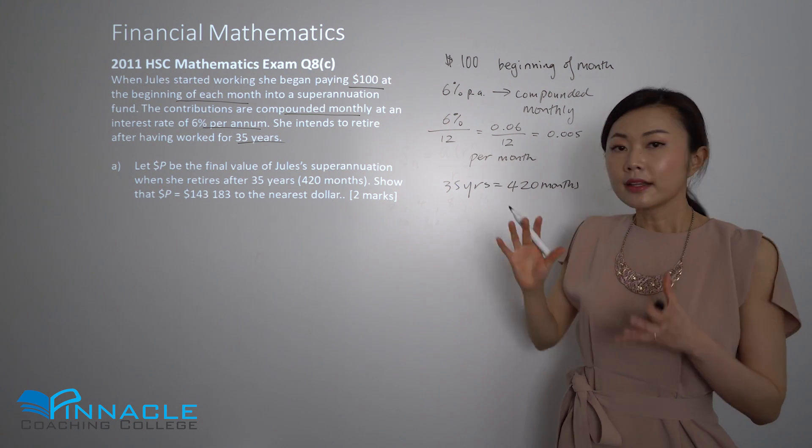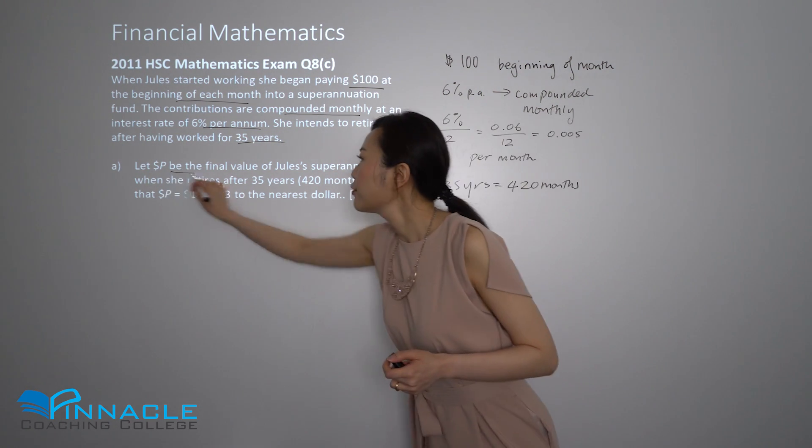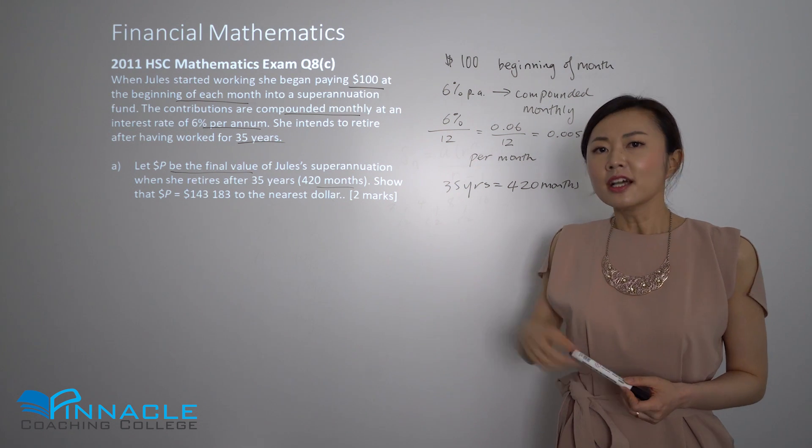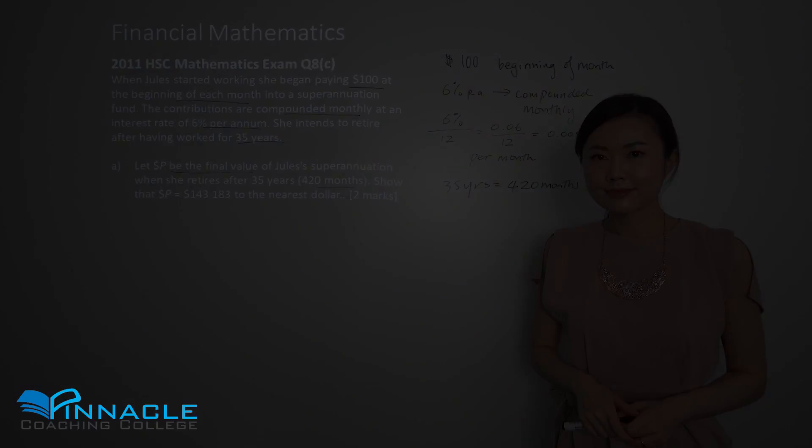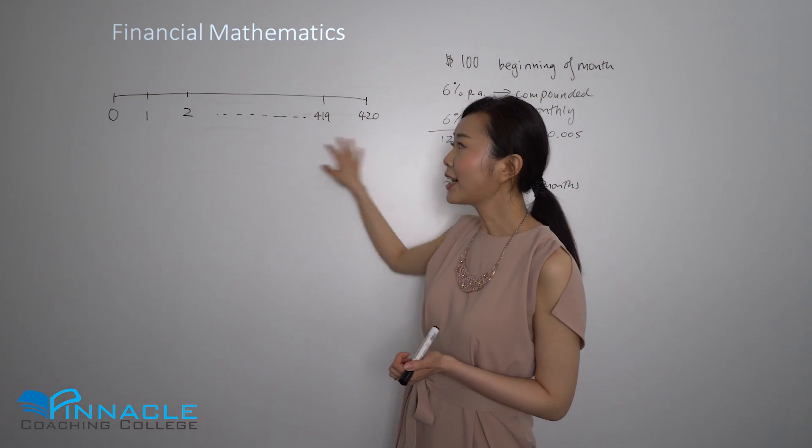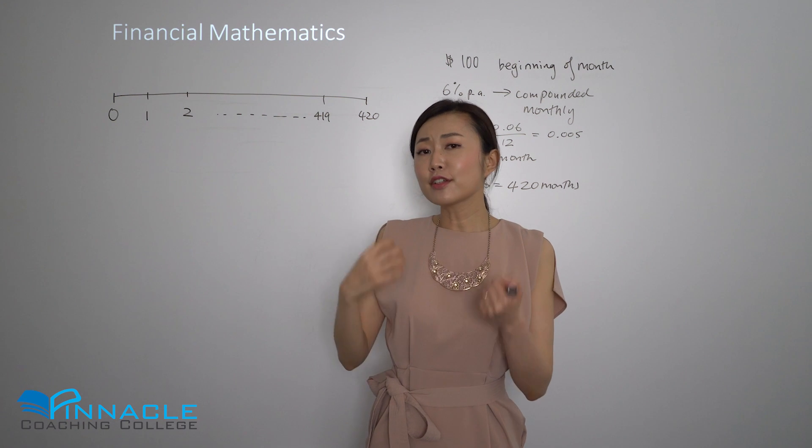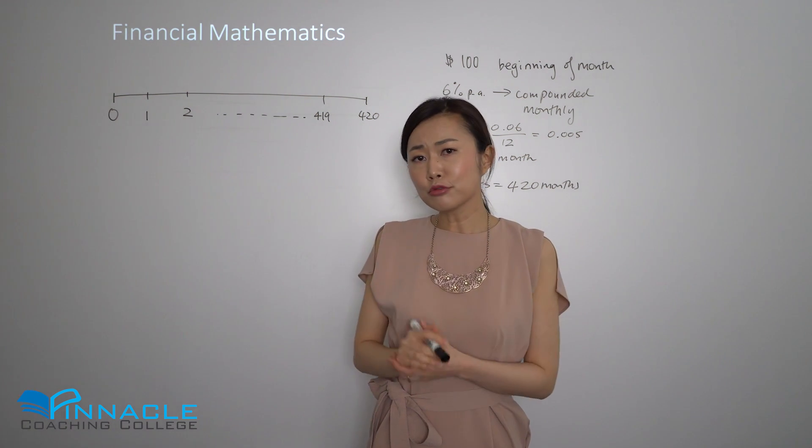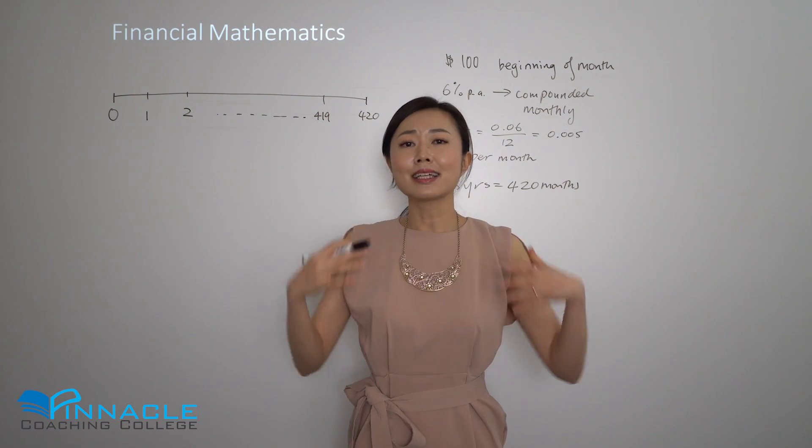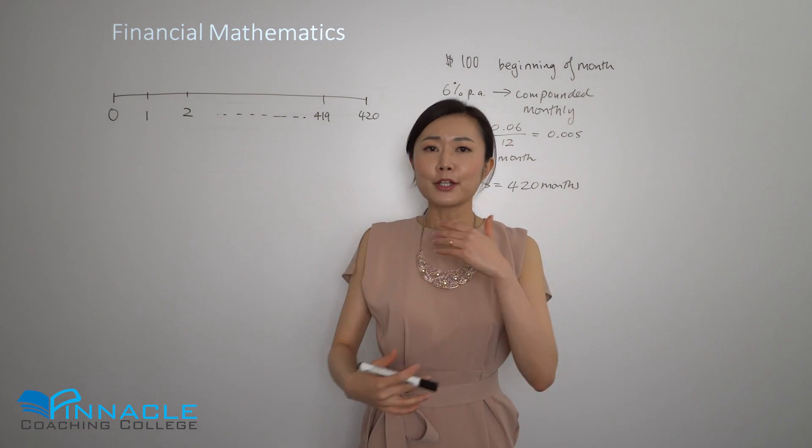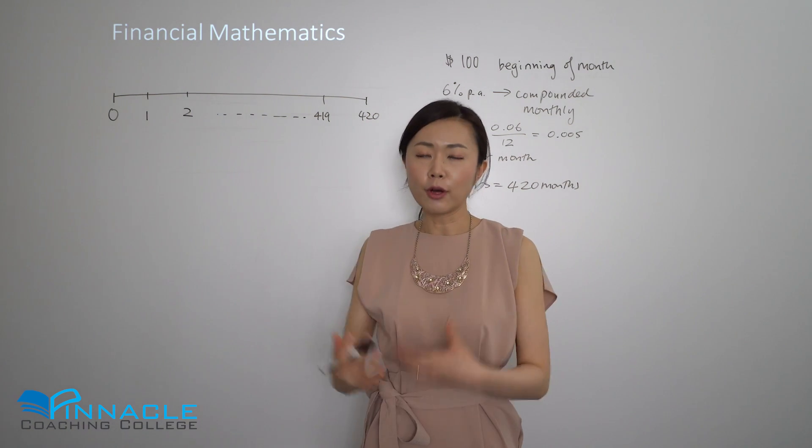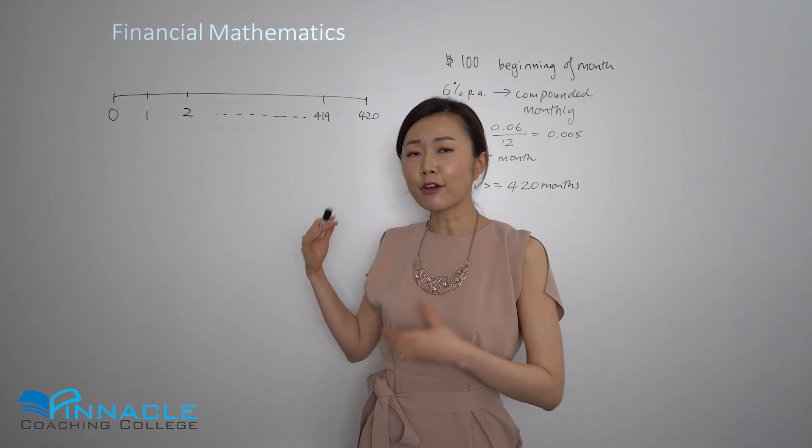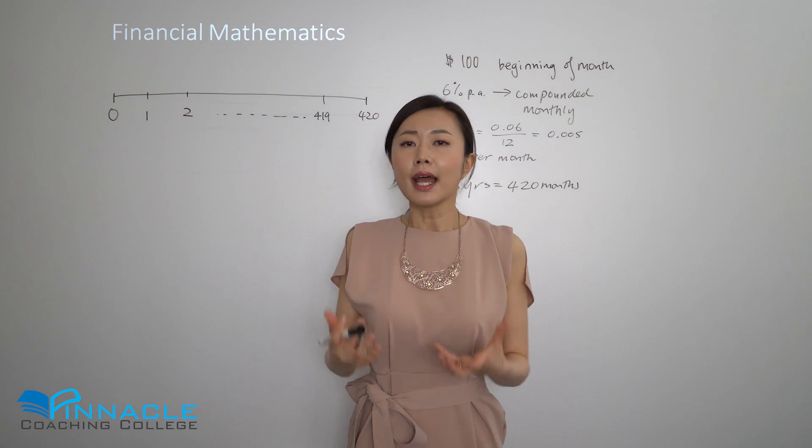That's pretty much it. Now the objective here is to find the final value at the end of the 420 months. Not a lot of marks here but a very standard question. What I've got here is a little timeline to help us understand how the different streams of payments are going to be compounded. This is a tool I would often teach my students to help them analyze more complex situations, especially if there are changing terms of the compounding. I want to show you how this tool applies to a very basic component.